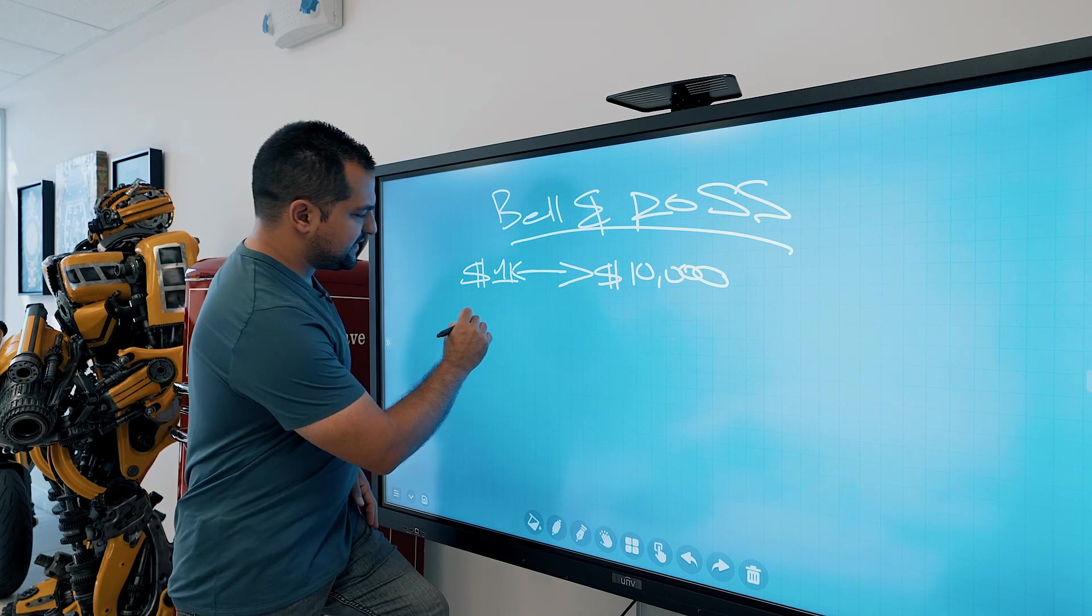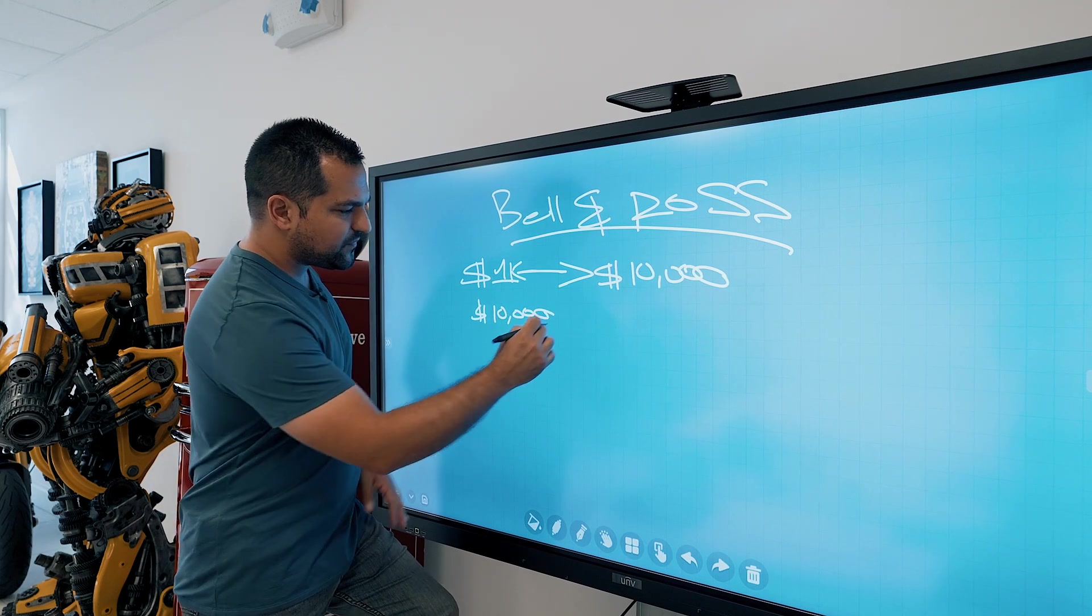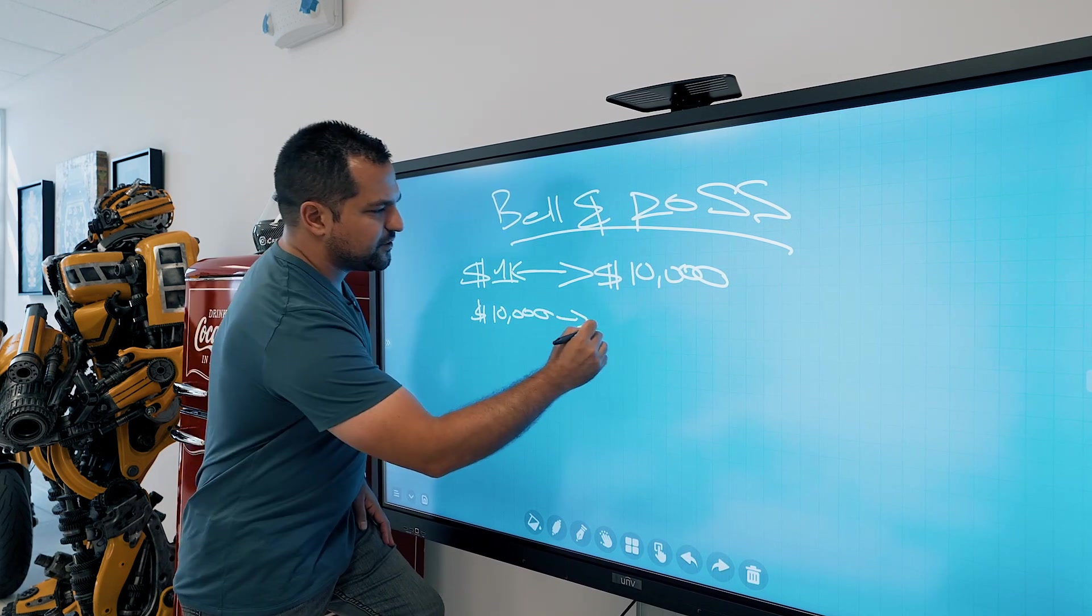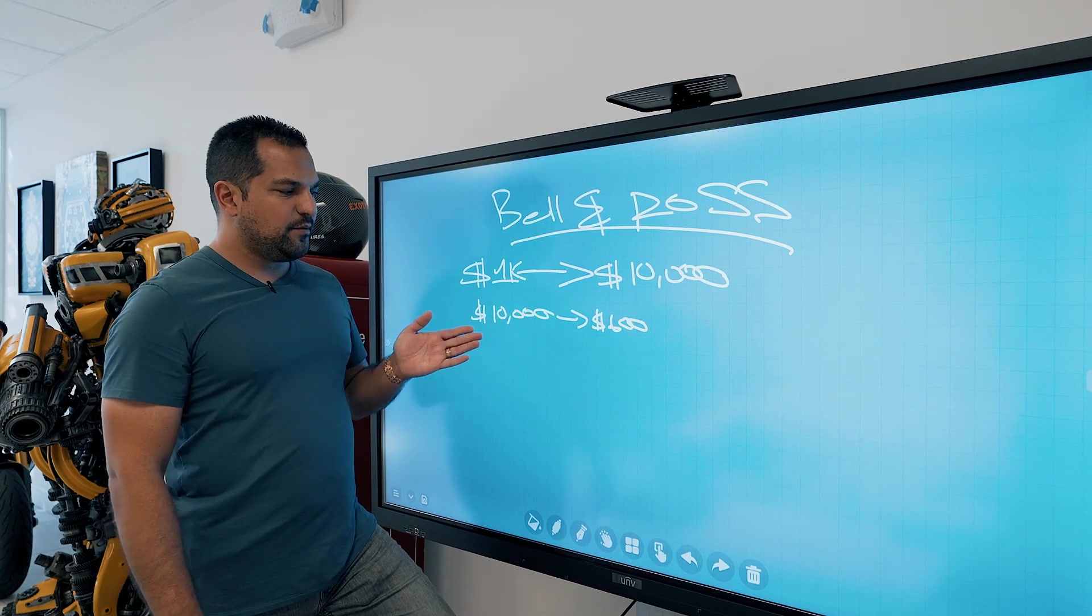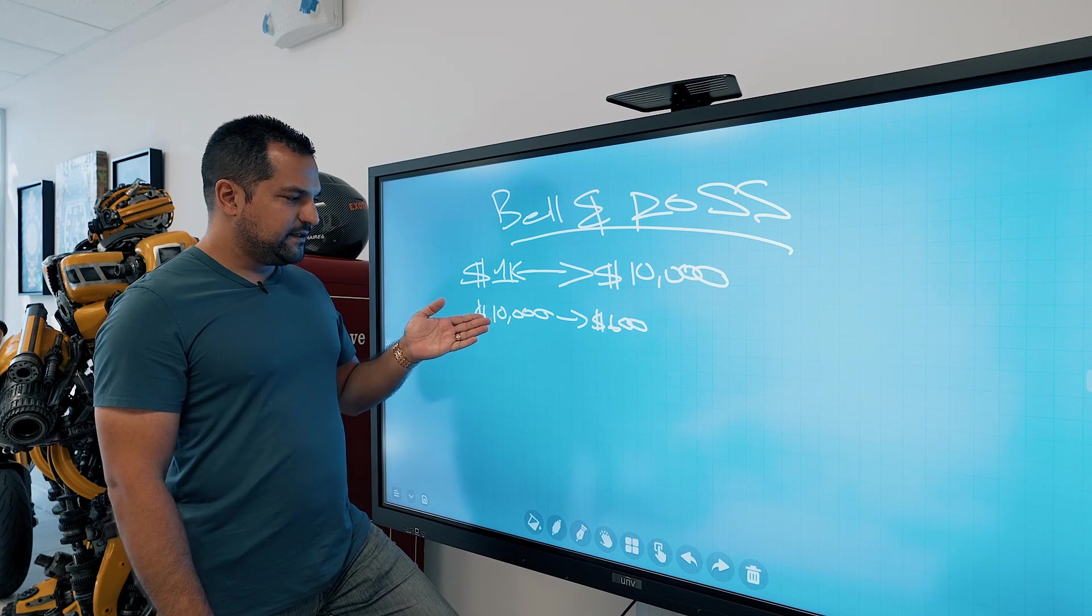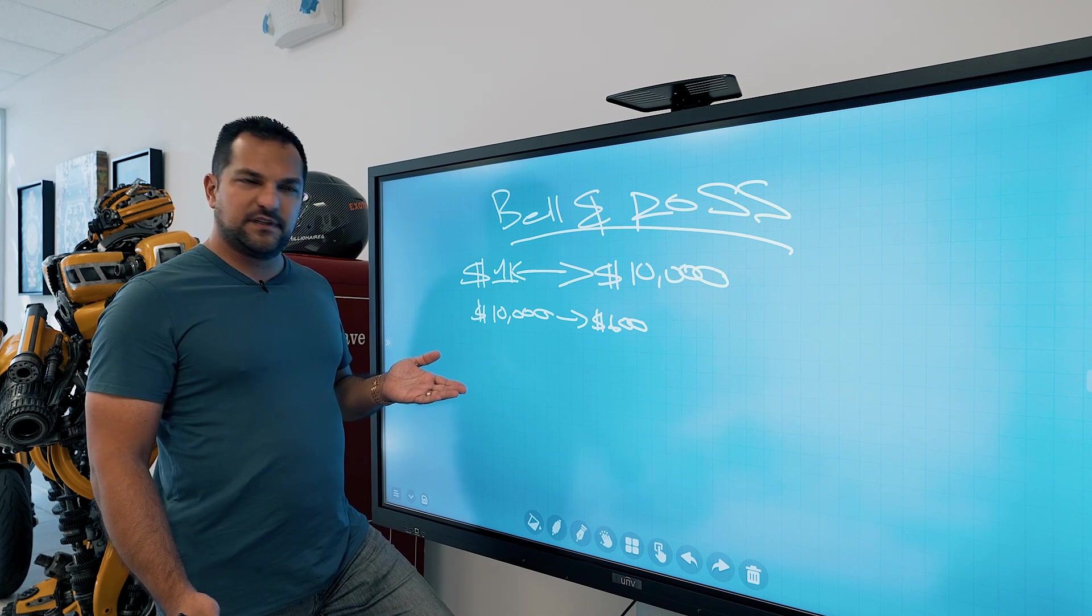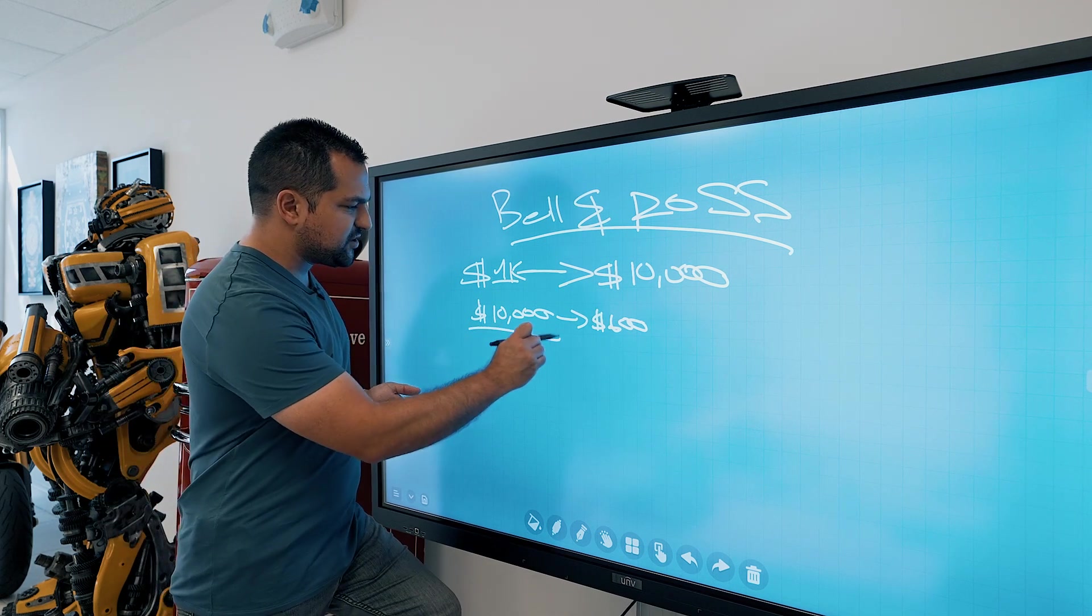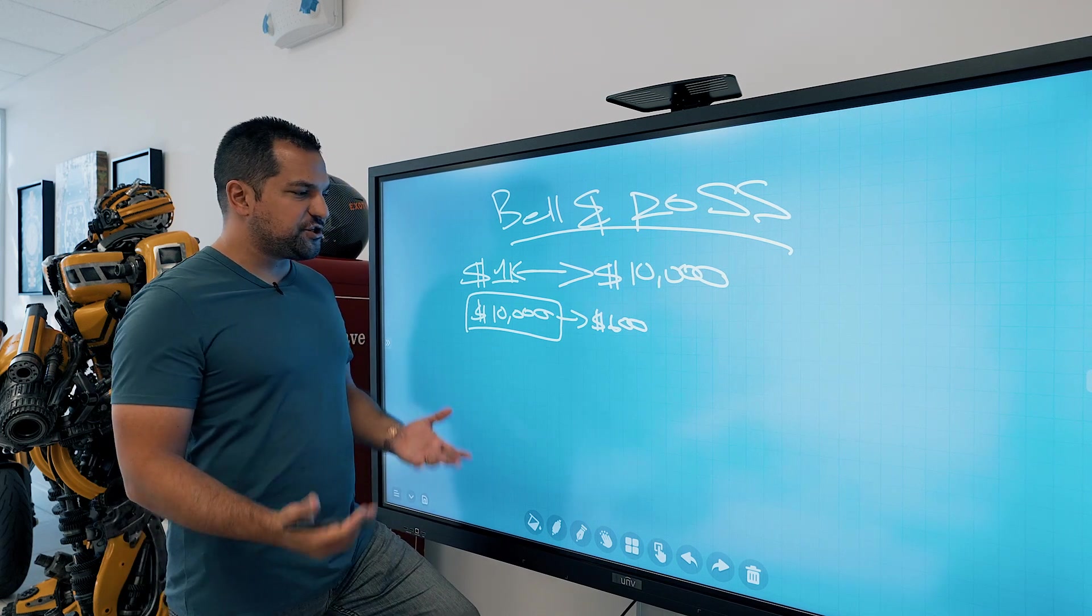So what that means is on an example, if you had a Rolex deal for $10,000, the average wholesaler makes like $600. That's a pathetic excuse for trading the watch. It's just awful. It just doesn't make sense to take $10,000 worth of liability to make $600, it's just stupid.